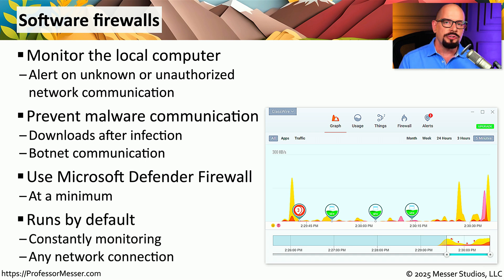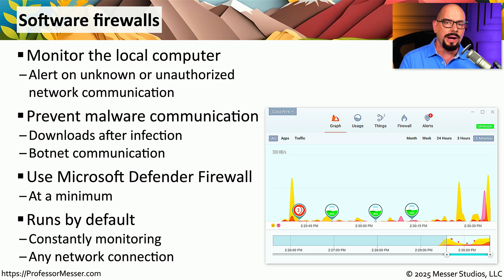Most operating systems include a software-based firewall, and it's always a good idea to enable it and have it running all the time. This allows you to have a process constantly watching network communication, and if there is unexpected network traffic from malware or any source, the personal firewall will identify it, alert, and block it from communicating.